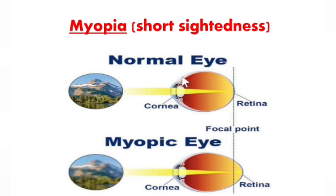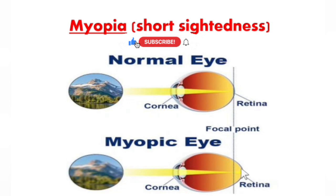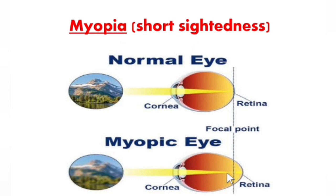As you can see, in a normal eye the image forms on the retina. In the case of a myopic eye, however, far or distant objects are not clear — they are blurred. The reason behind this is that the image does not form on the retina; instead it forms in front of the retina, which is why the person is unable to see distant objects clearly.